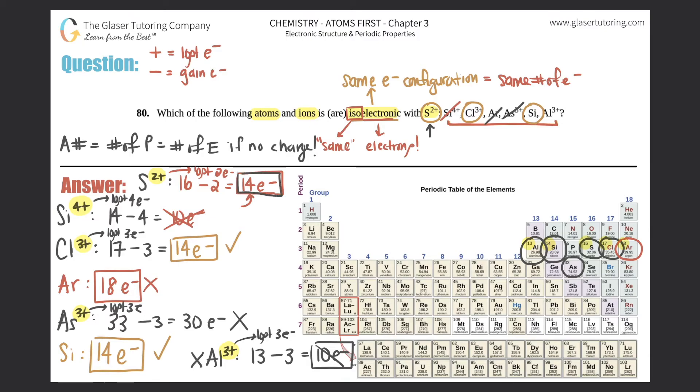We could cancel these out. So the only two that are isoelectronic with sulfur 2+ is chlorine 3+ - that's the ion - and silicon by itself, that's the atom. Cl3+ and Si, box that answer off. Those are the two - the one atom and the one ion that are isoelectronic with S2+.